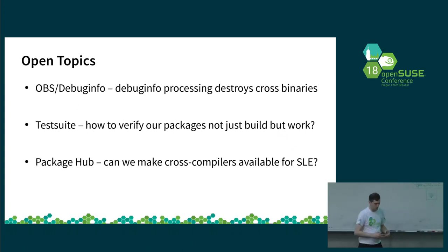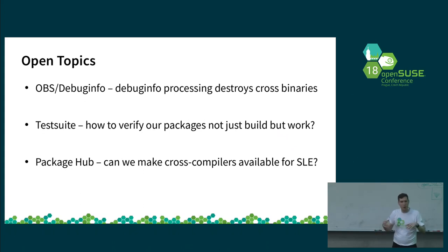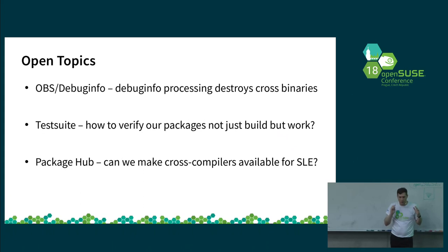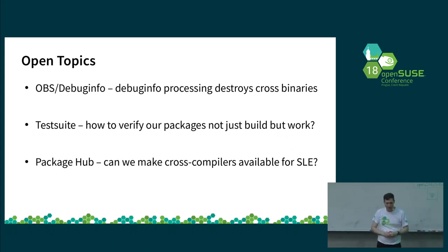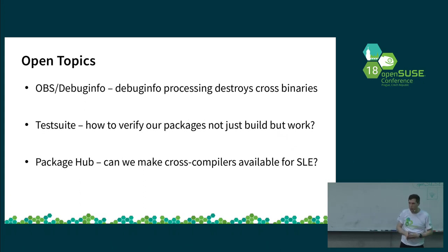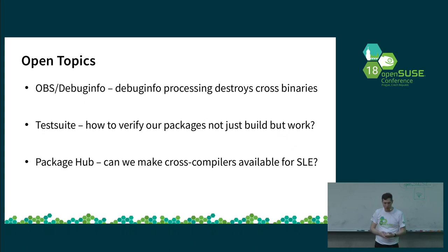Open topics: whenever we build cross-compiled code — newlib packages that execute on the microcontroller board or another core — when OBS and RPM scripts run to extract debug info symbols into a separate package, that has led to binaries for foreign architectures breaking. We're not entirely sure why, but we've had to always explicitly disable the stripping and extraction of debug symbols from such packages. It would be interesting to fix this in a central place rather than adding at least two lines to every spec file to suppress this functionality.